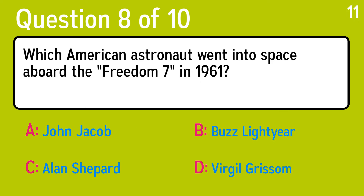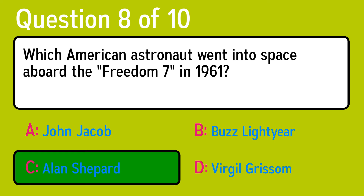Question 8. Which American astronaut went into space aboard the Freedom 7 in 1961? The correct answer is C, Alan Shepard.